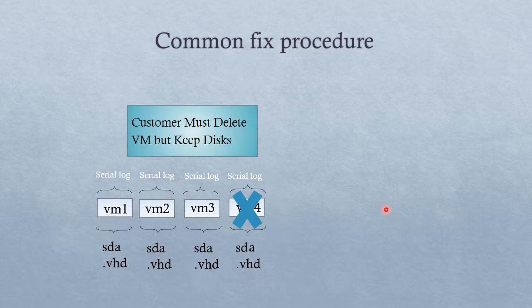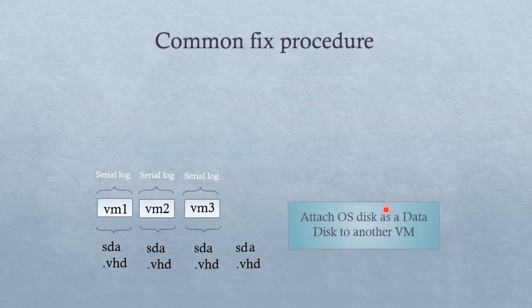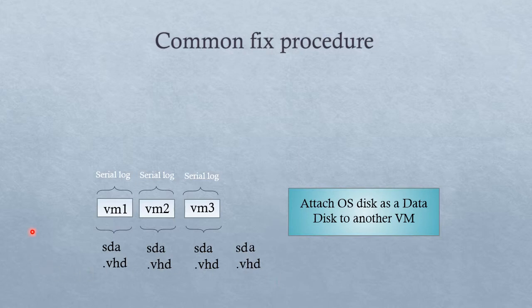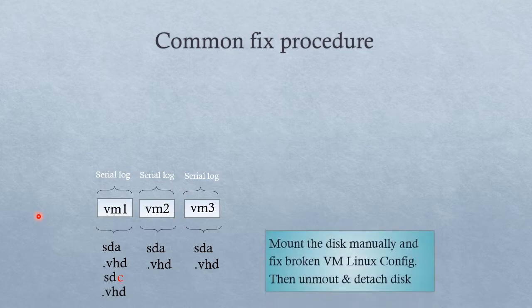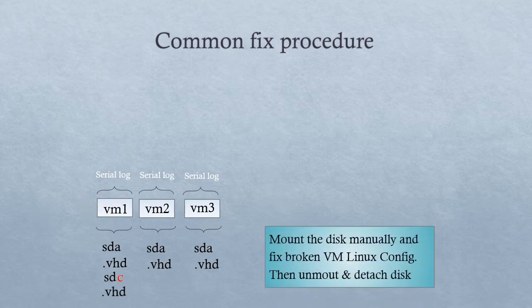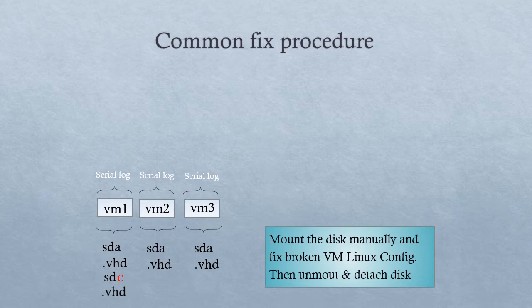Azure support will probably advise you to delete the virtual machine but keep the OS disk — the OS VHD disk. Once we've deleted the virtual machine, we can then associate the VHD of that broken machine to another virtual machine — either a temporary machine or an existing one. Note: if it was the last virtual machine in a cloud service, we would lose the VIP address. We then attach, via the portal, the broken virtual machine's OS disk to another machine and mount it manually into the Linux virtual machine.